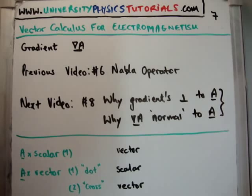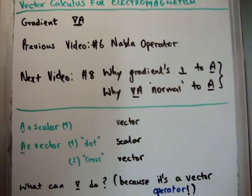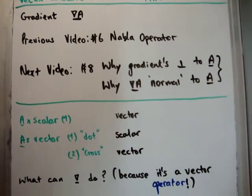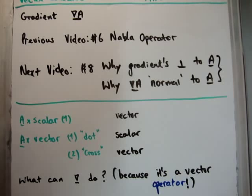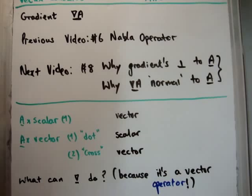In the previous video I discussed the nabla operator, so I'm not going to dwell on that. But what I would like to say is that the nabla is a vector operator — it will always give you back a vector, but it is an operator nonetheless. So it is slightly different to a normal vector in that you can do slightly different operations. The question I pose is: what can the nabla operator do? Because it's a vector operator, it doesn't just follow the same three rules as a regular vector.